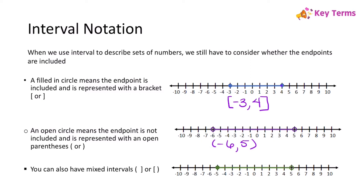You can also have mixed intervals. Because if one endpoint is included and the other endpoint is not, we're going to have a mixed interval. So in this example, I would do my square bracket with negative 5, and then I would do my open parenthesis with positive 5.